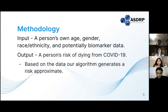Our basic methodology is that we would input a person's demographic data, like their age, gender, race, and ethnicity. Based on that data, our algorithm would generate a risk approximate, and using that, we would determine the person's risk of dying from COVID-19.